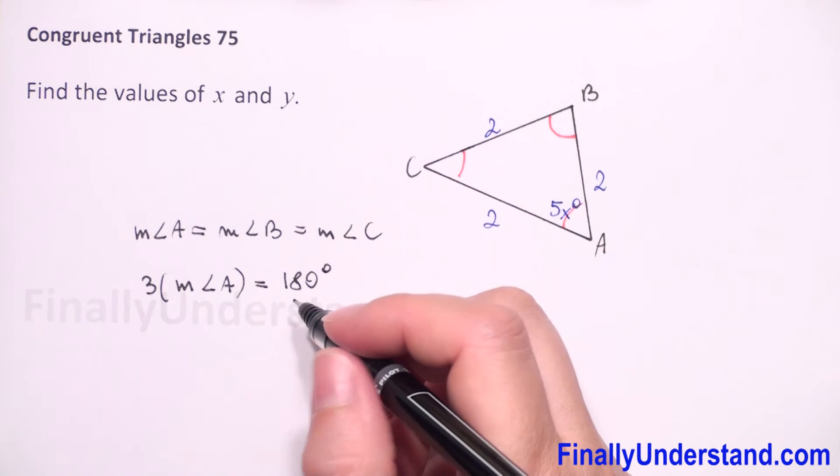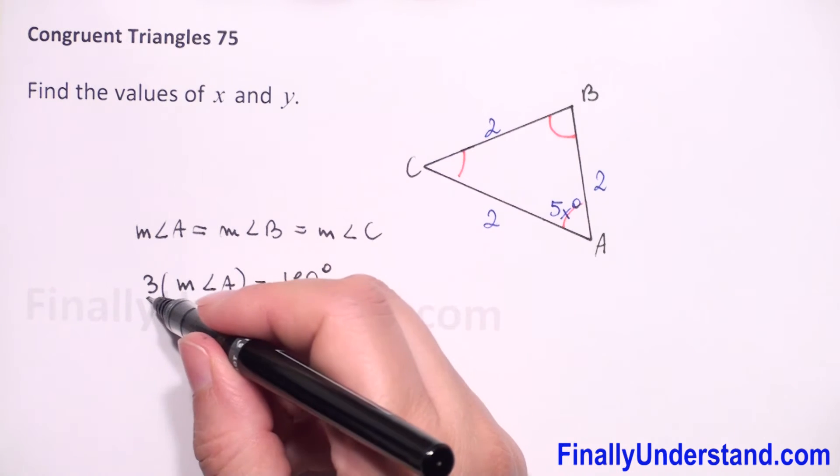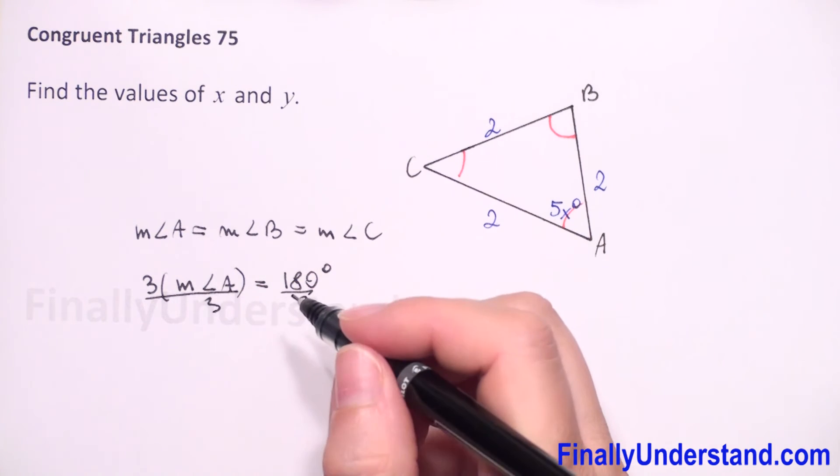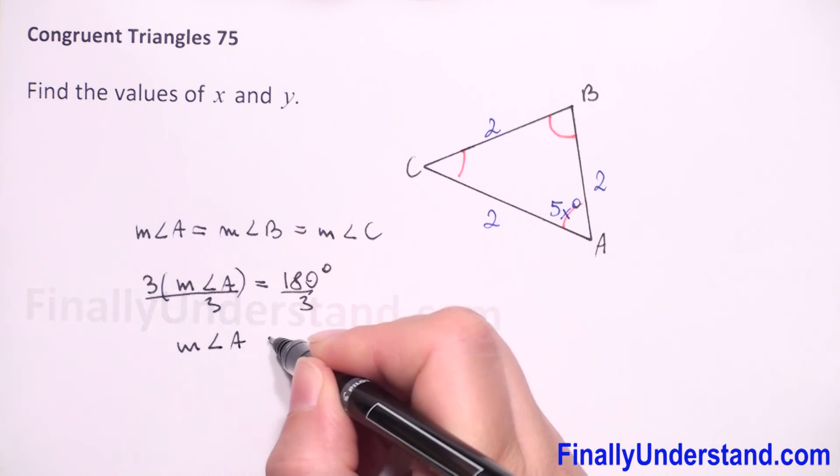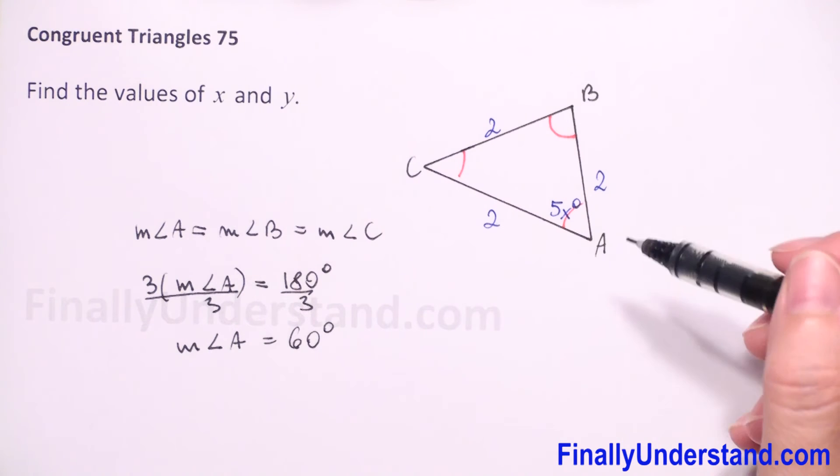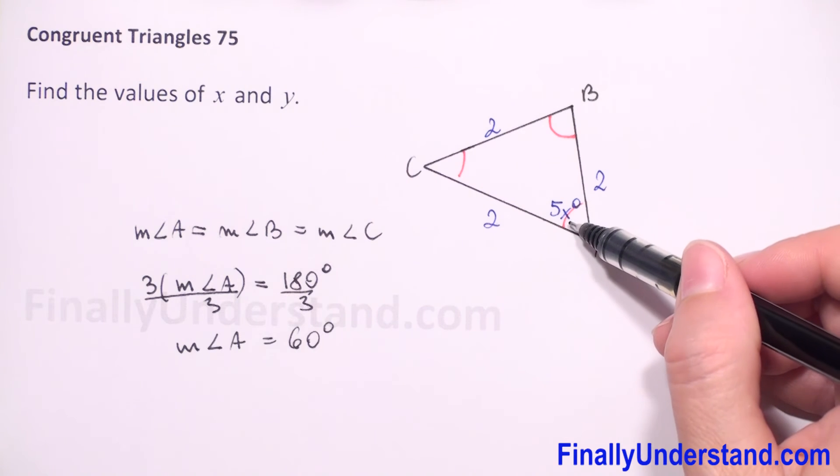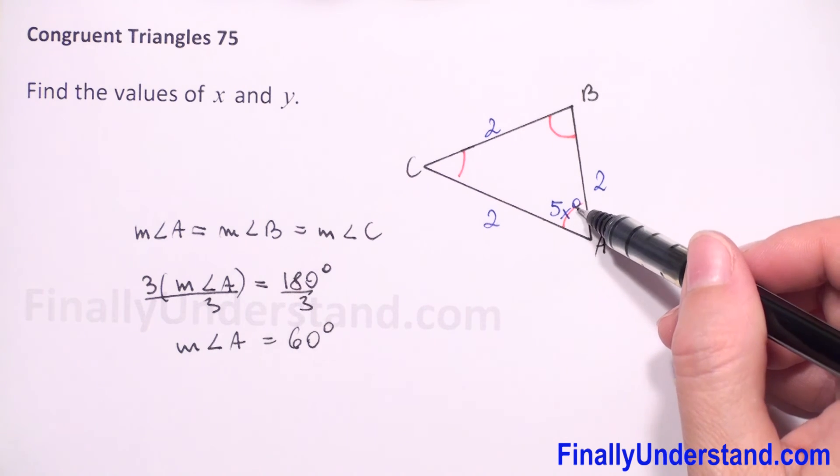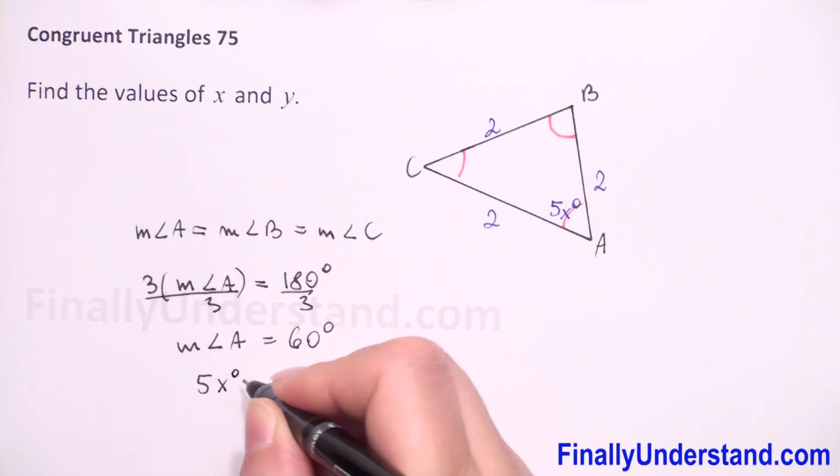So now we can divide both sides by 3, and we have that measure of angle A is equal to 60 degrees. And because we have given that A is given by the expression 5x degrees, we can substitute measure of angle A by 5x degrees.